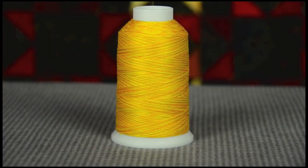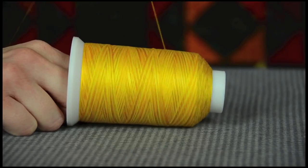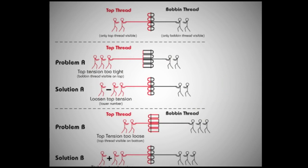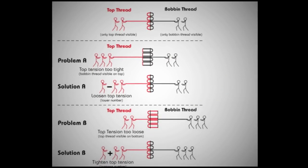Most cones are cross wound and are meant to unwind from bottom to top. If a cone is unwound from off the side, there is a lot of extra tension and drag which increases the likelihood of breakage and bad stitches.